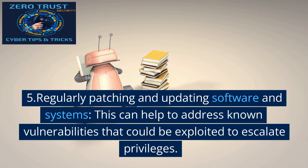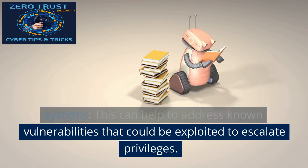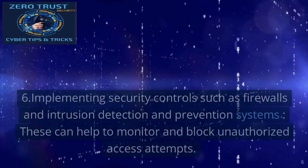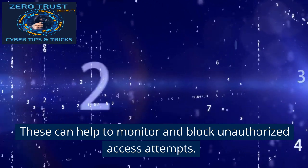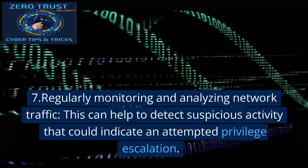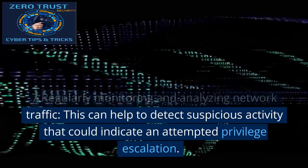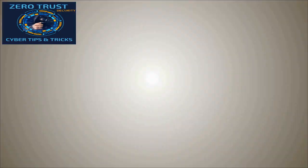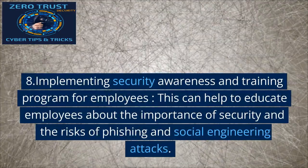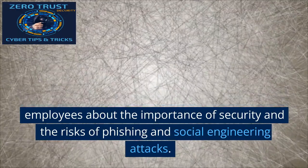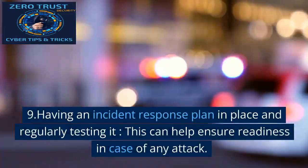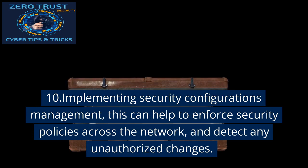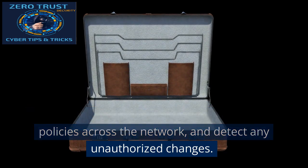Fifth, regularly patching and updating software and systems to address known vulnerabilities that could be exploited to escalate privileges. Sixth, implementing security controls such as firewalls and intrusion detection and prevention systems to monitor and block unauthorized access attempts. Seventh, regularly monitoring and analyzing network traffic to detect suspicious activity that could indicate an attempted privilege escalation. Eighth, implementing a security awareness and training program for employees to educate them about the risks of phishing and social engineering attacks. Ninth, having an incident response plan in place and regularly testing it to ensure readiness in case of an attack. Tenth, implementing security configuration management to enforce security policies across the network and detect any unauthorized changes.